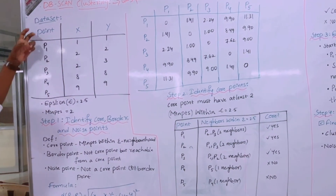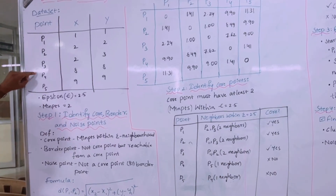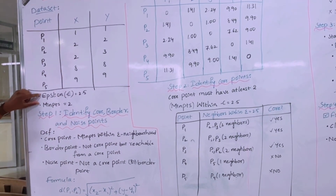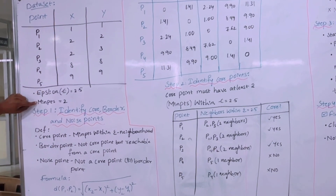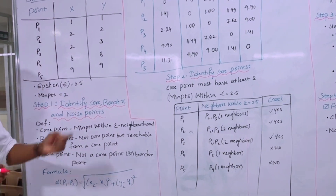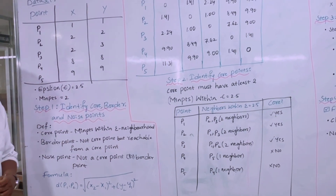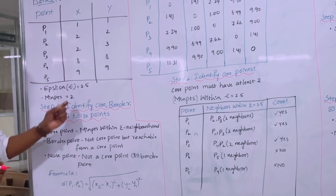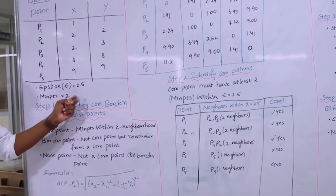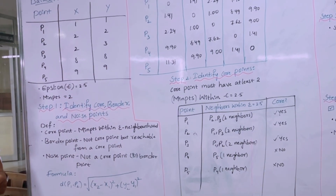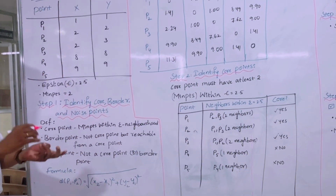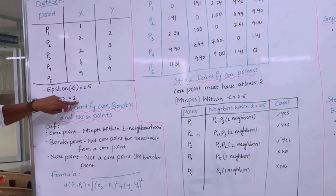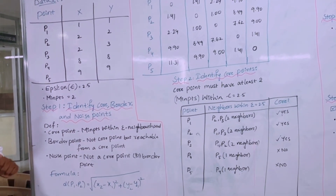We are provided with a dataset containing points P1, P2, P3, P4, and P5, each having X and Y coordinates. We are also given two parameters: epsilon and minimum points. Epsilon is the maximum distance between two points to be considered as neighbors. Minimum points is the threshold — here it equals 2 — for a point to be considered a core point.